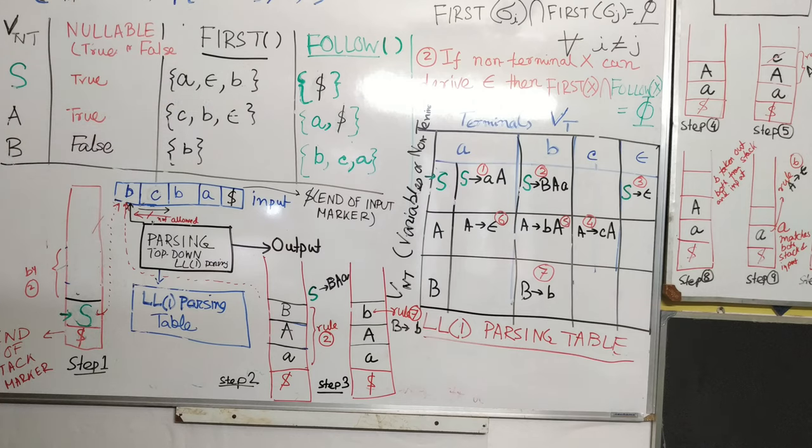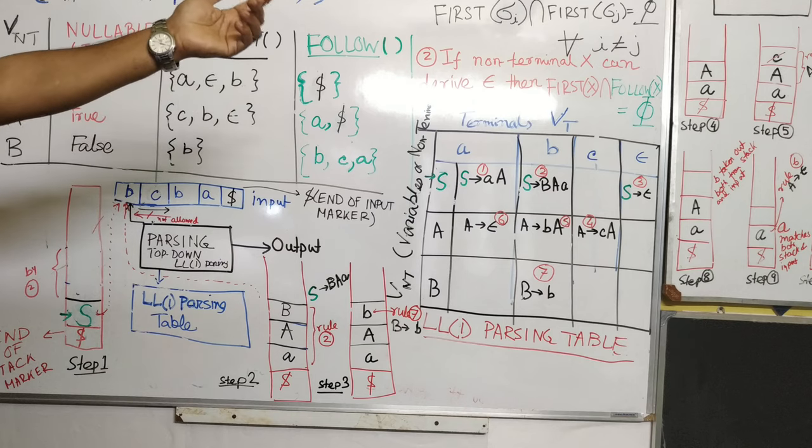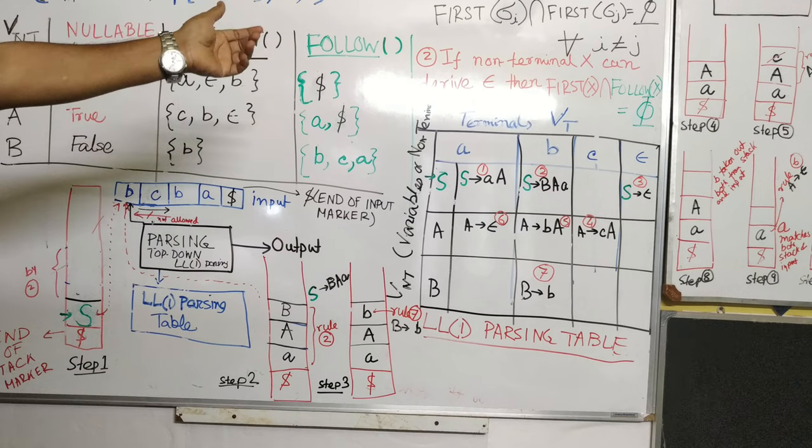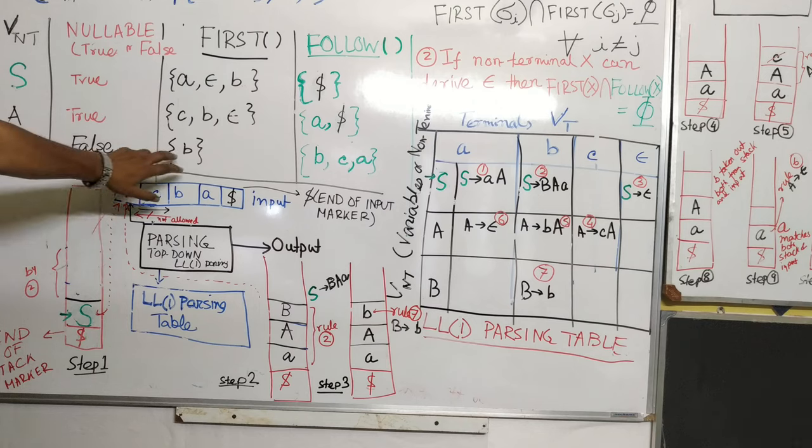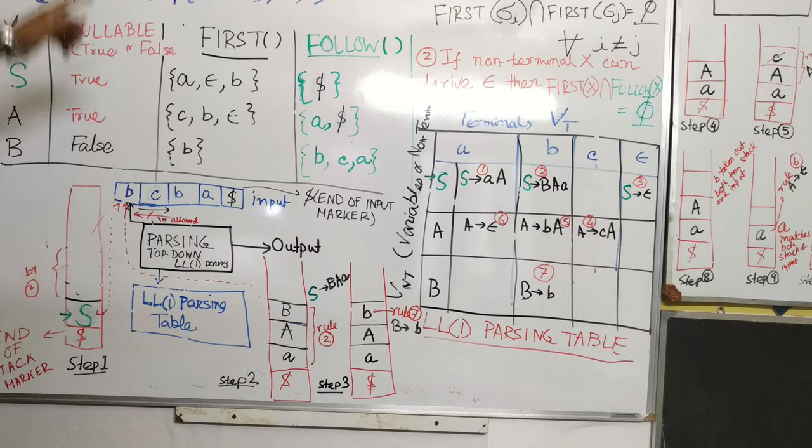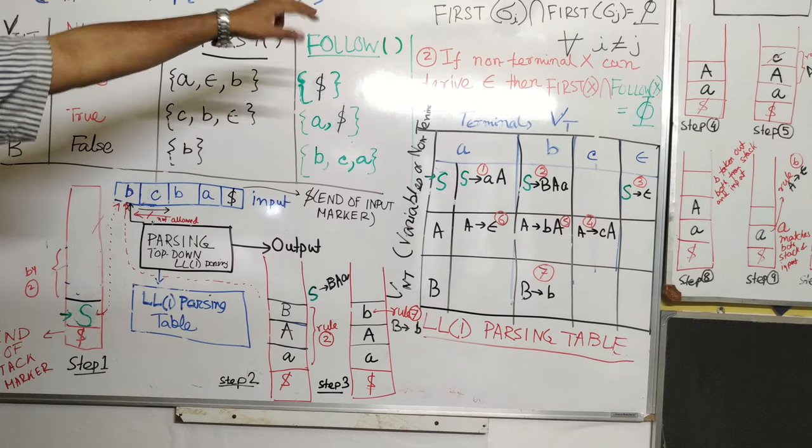Now check for rule number one. For each production a to sigma one, that is the string, a to sigma two string, first of sigma i intersection of first of sigma j for all, inverted a means for all cases, i not equal to j. So that we check it here. For ace, the first rule, the first would be a, and for rule number two, the first of b is b, and if epsilon, first is epsilon. So for ace is okay. We can check subsequently for all other rules. This first condition is valid, so it is now fit case for top-down parsing.